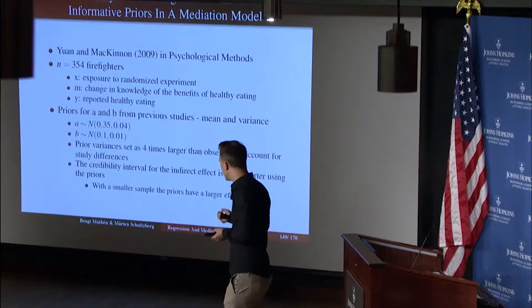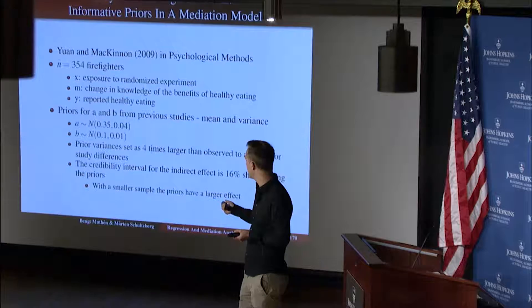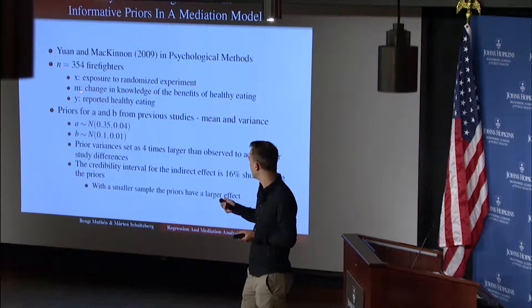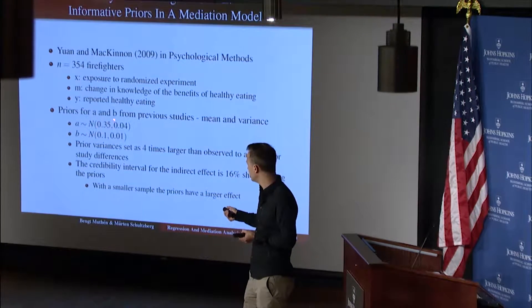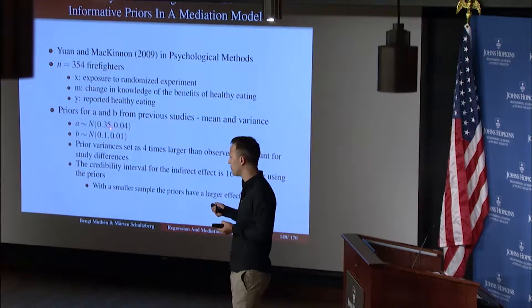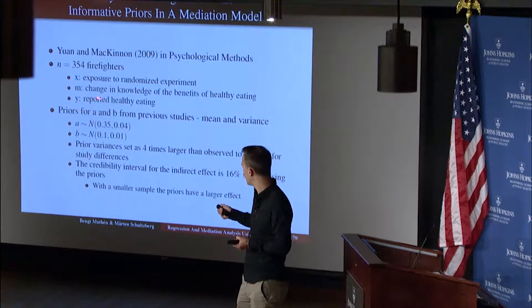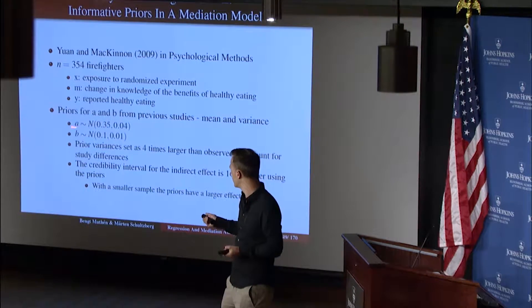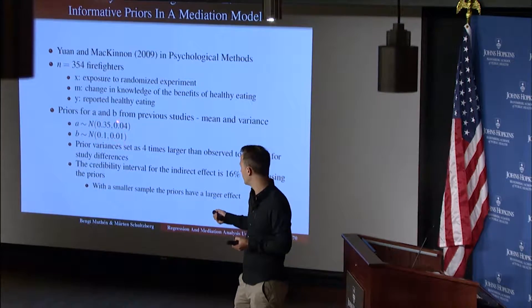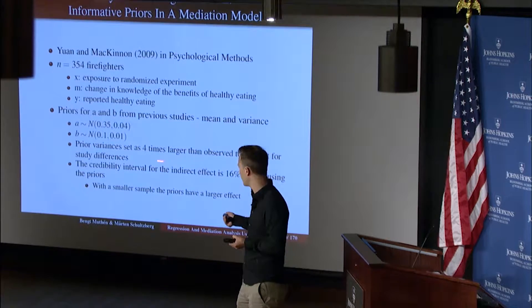It turns out there is a previous study on this. That study shows that the slope of the mediator — change in knowledge regressed on the intervention — has a sampling distribution with a normal distribution with mean 0.35 and variance 0.04. We also have results for reported healthy eating regressed on the mediator, which I call B: it has a normal distribution with mean 0.1 and variance 0.01. However, we actually increased this variance four times larger than what was observed in the previous study.